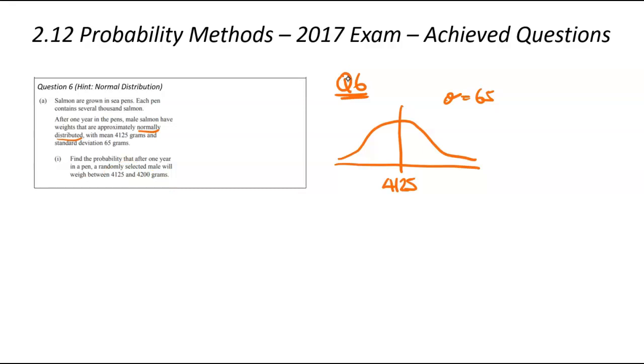The mean goes down the bottom, and the standard deviation comes up the top. We then shade in the area that we're interested in. We've got 4,125 drawn as a line already. That's the mean, and slightly more than that will be 4,200, and I'm going to shade in the area that sits between those. That area is the probability, and that's what we're trying to calculate here.